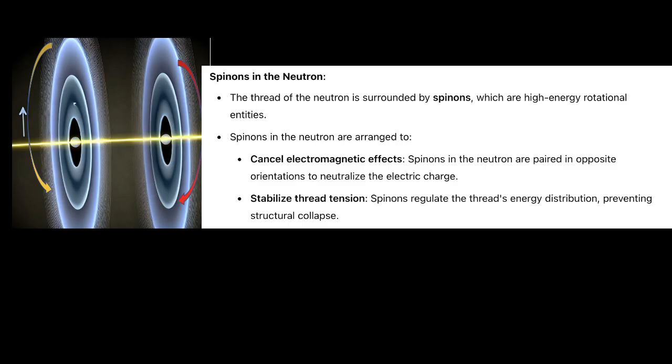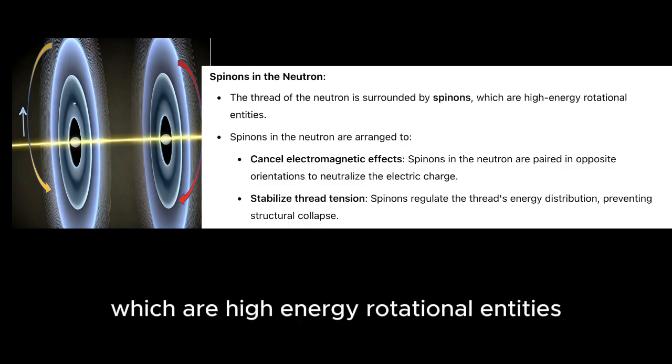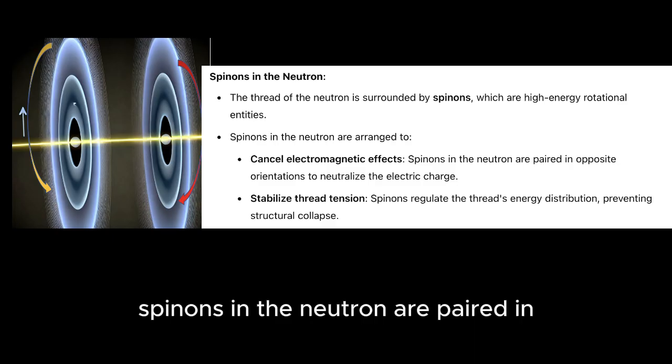Spinons in the neutron. The thread of the neutron is surrounded by spinons, which are high-energy rotational entities. Spinons in the neutron are arranged to cancel electromagnetic effects. Spinons are paired in opposite orientations to neutralize the electric charge.